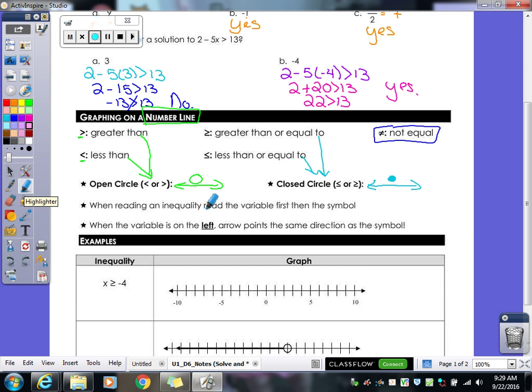When reading an inequality, you need to read the variable first and then the symbol. That is key because it's not always going to be in order from left to right. It's not always going to have the variable on the left side. Sometimes the variable is on the right side. So you have to be able to read from wherever the variable is. Now only when the variable is on the left does the arrow point which way you're going to shade. I don't like to rely on that because the variable is very rarely on the left these days.